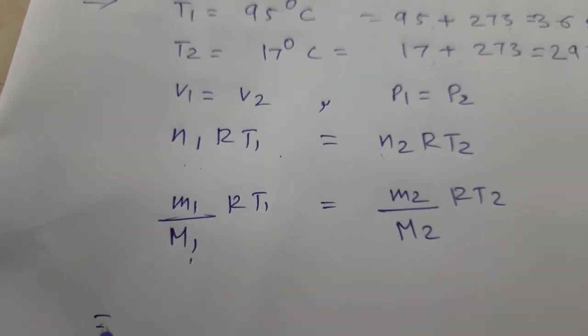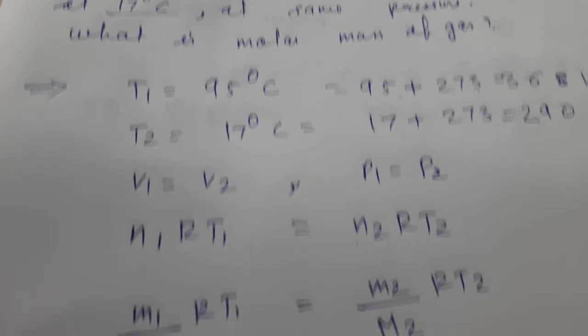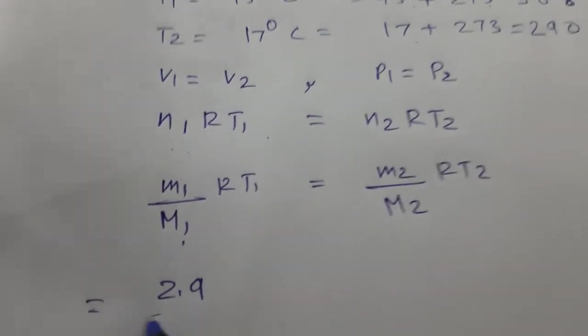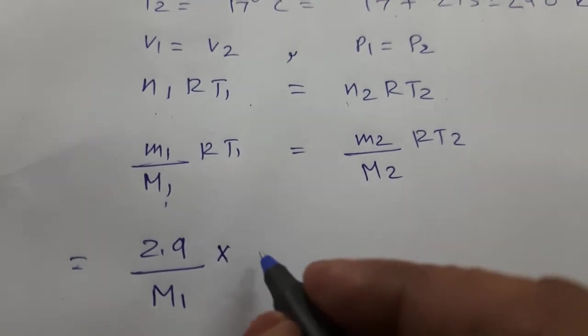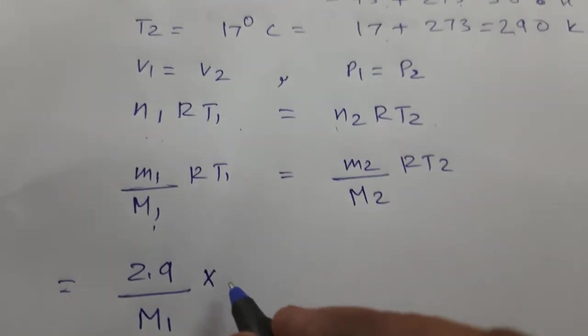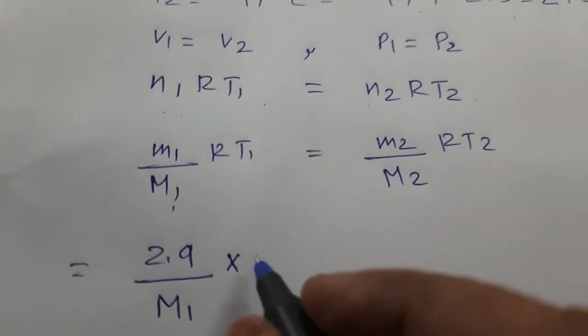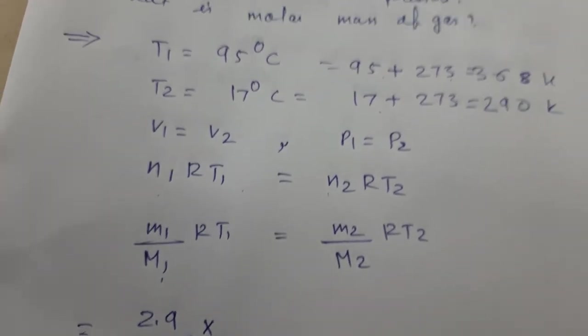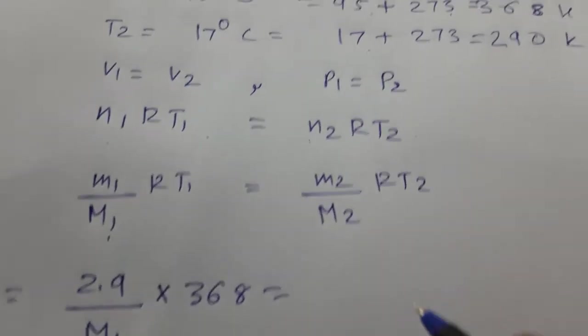Therefore, 2.9 divided by M1 into RT1 equals - capital M we do not know and small m is given, that is 2.9 grams of a gas. So 2.9 upon M1, we have to find out, into RT1.